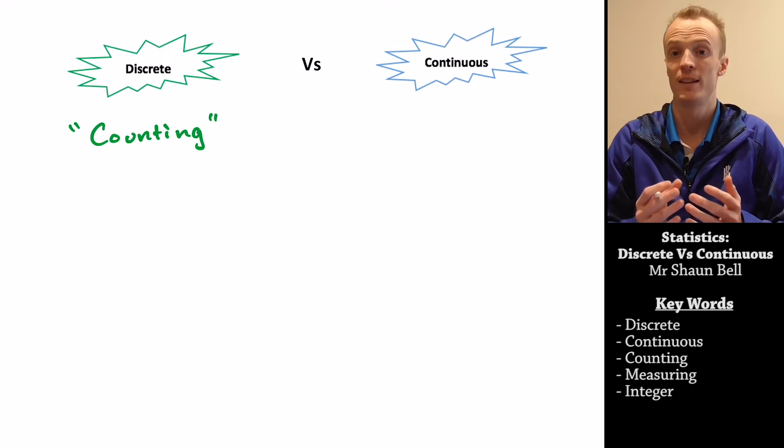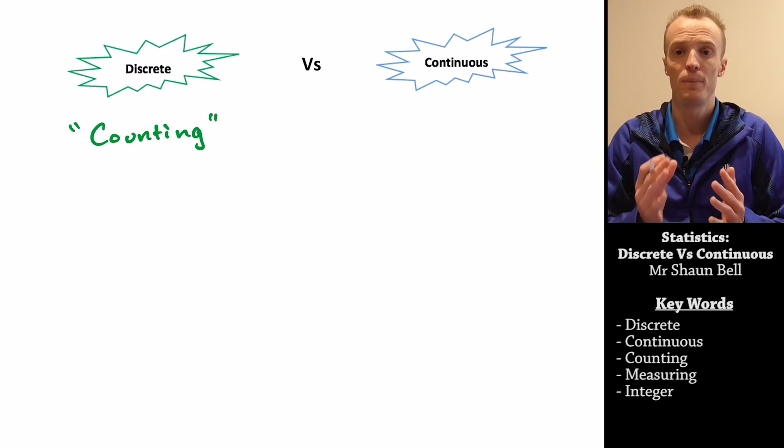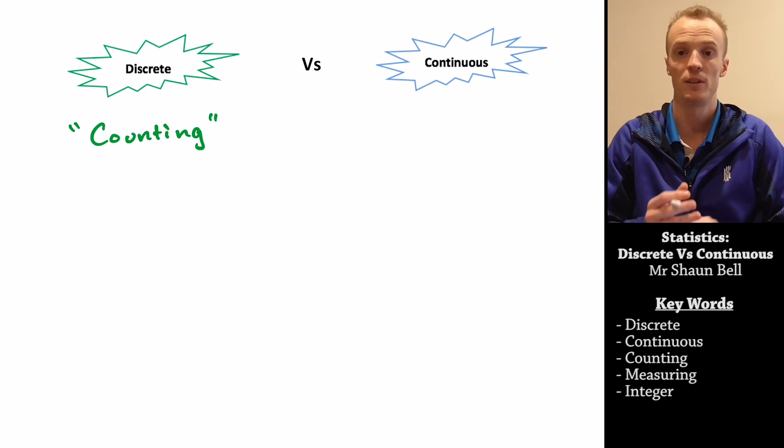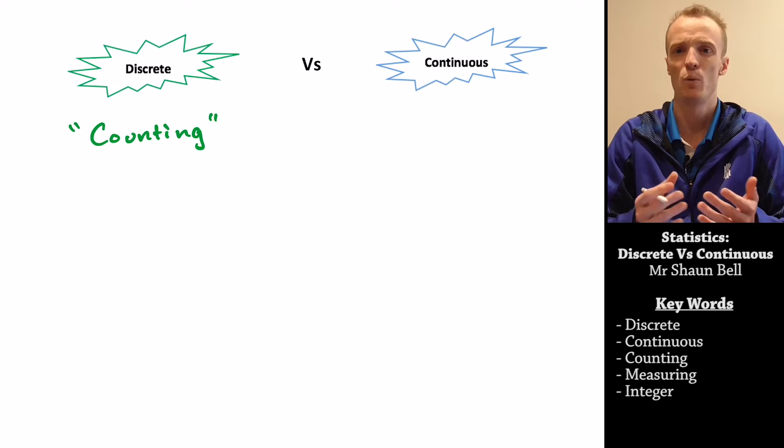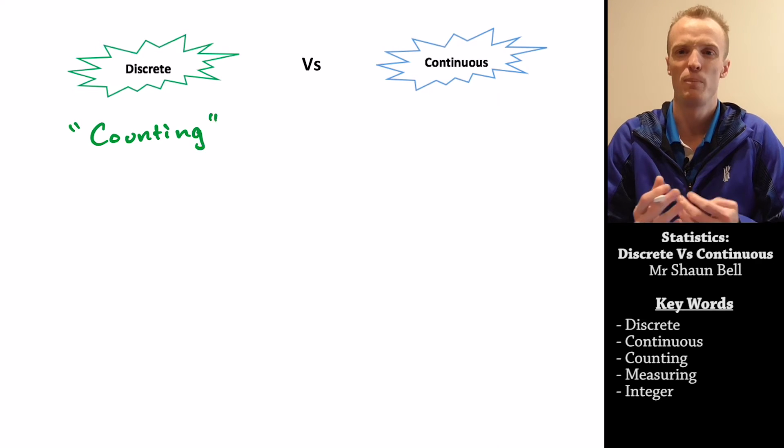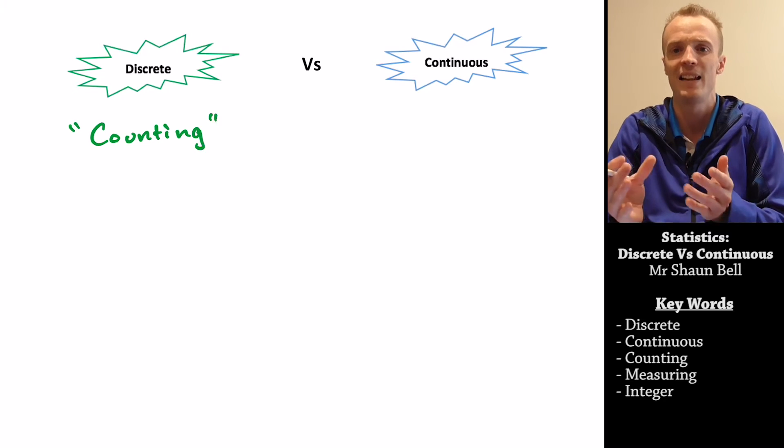For example, if you were to look at the attendance of a sporting event, that would be considered to be discrete data, because you're counting the number of people that enter that sporting event. And that's always going to be a whole number, well at least you'd hope so, because half a person can't really attend an event.